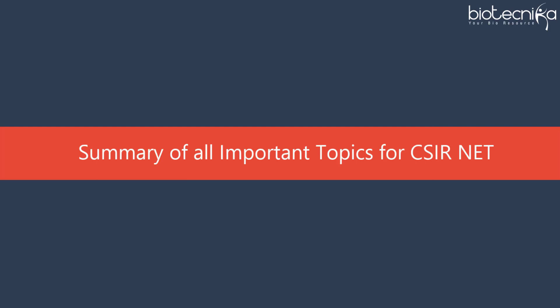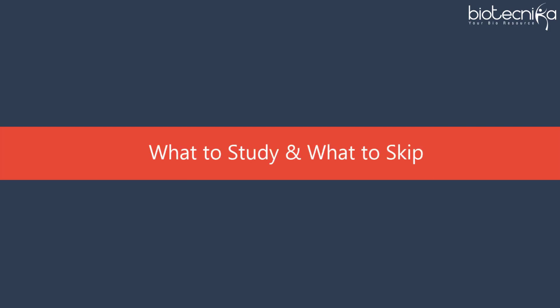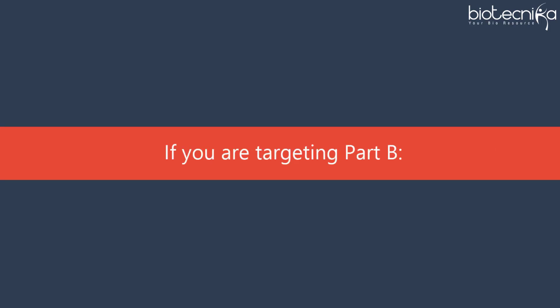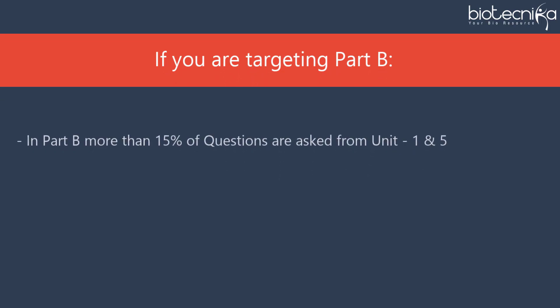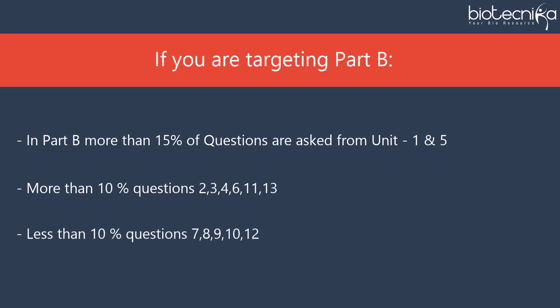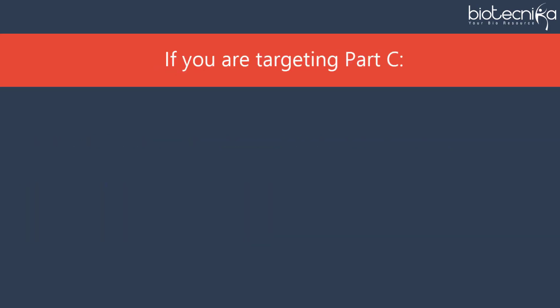Summary of all important topics for CSIRNET — what to study and what to skip. If targeting Part B: more than 15% of questions are from Units 1 and 5; more than 10% from Units 2, 3, 4, 6, 11, and 13; less than 10% from Units 7, 8, 9, 10, and 12. If targeting Part C: more than 10% from Units 4, 5, and 13.